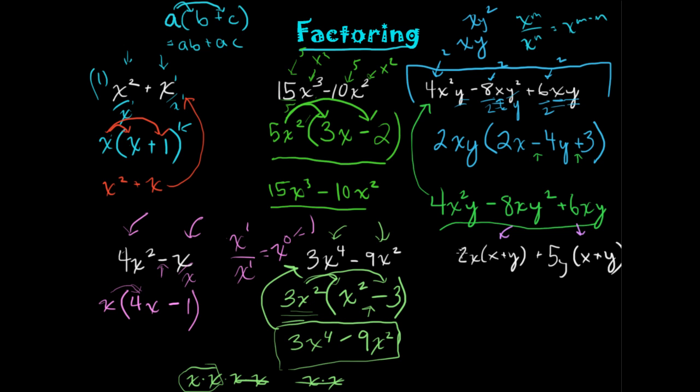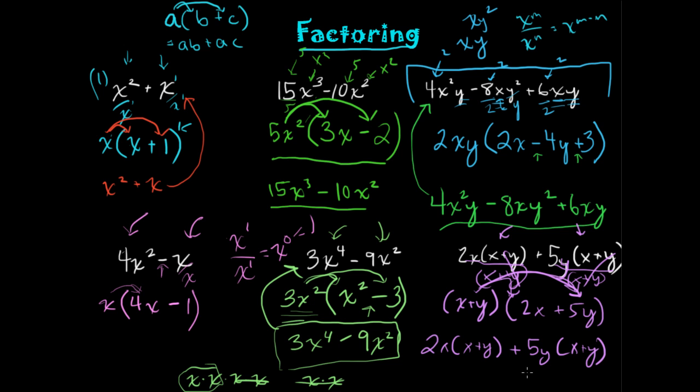In this last problem, we have 2X times the quantity X plus Y plus 5Y times the quantity X plus Y. What do these terms have in common? The X plus Y's. So you could factor out this entire expression in parentheses out of each one of these. 2X times X plus Y—if I was to factor out one X plus Y term, it just leaves me with 2X. If I was to do the same here with the 5Y, it just leaves me with the 5Y. So I get 2X plus 5Y. How do you check your answer? You just distribute this whole term through and you get 2X times X plus Y plus 5Y times X plus Y. That's a little bit on factoring. We'll go ahead and do some more examples, but I hope this is starting to make more sense.